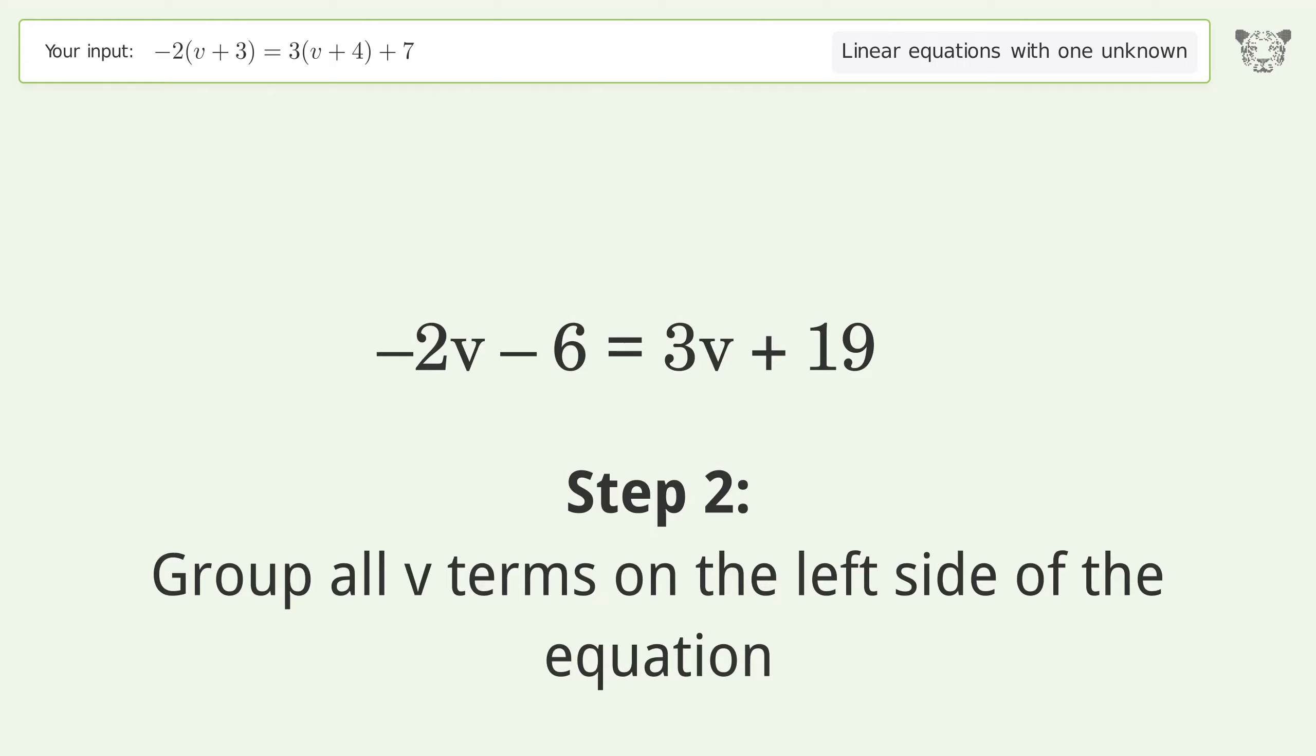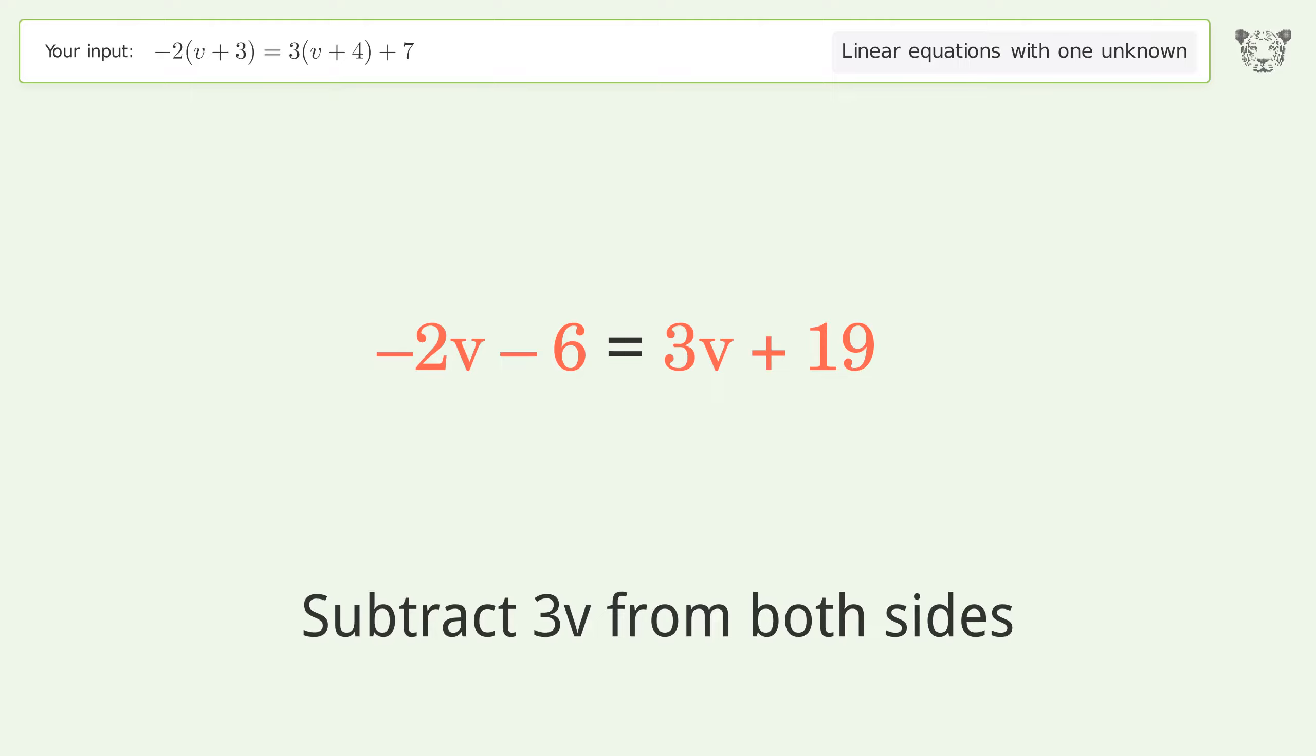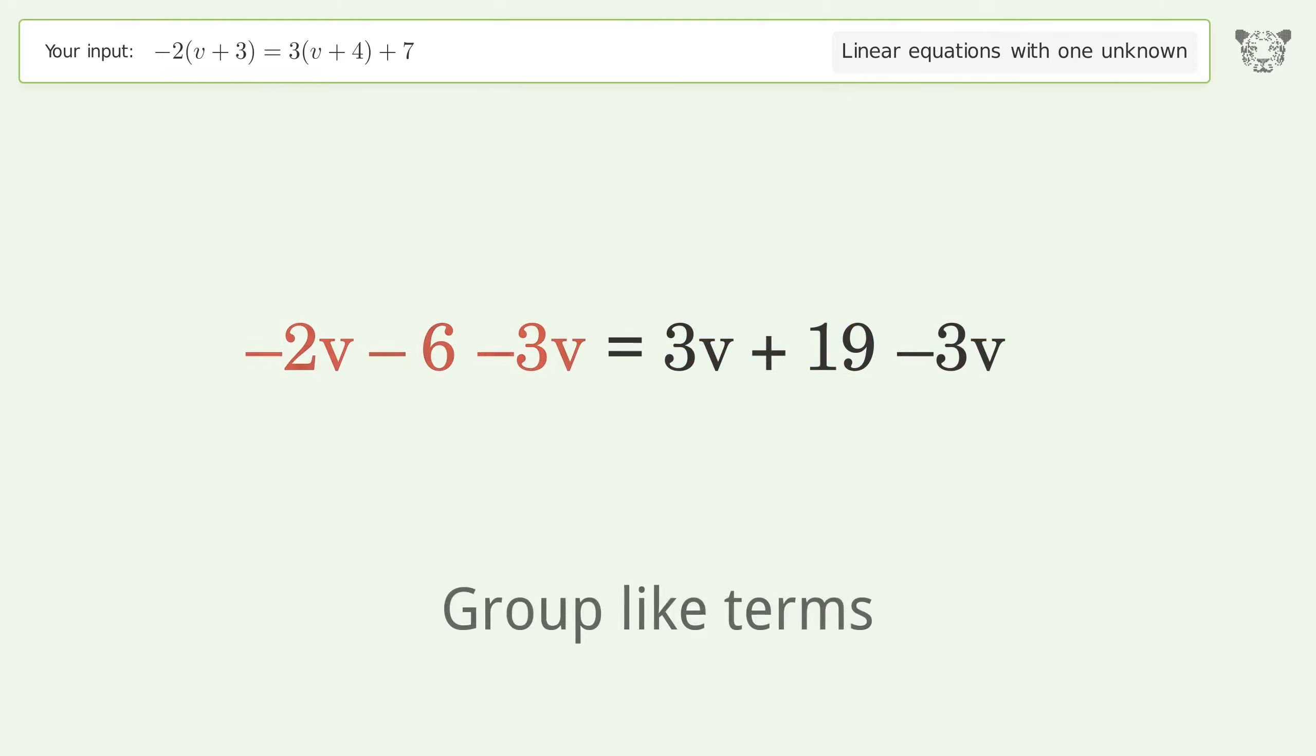Group all v terms on the left side of the equation. Subtract 3v from both sides. Group like terms. Simplify the arithmetic.